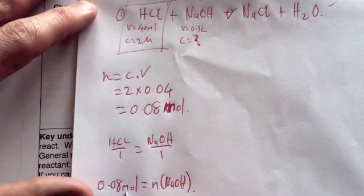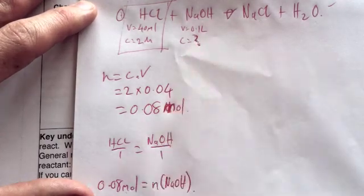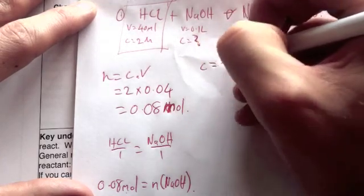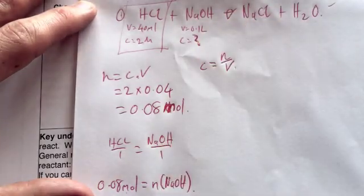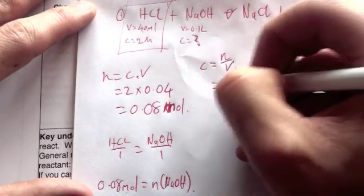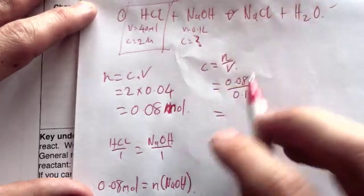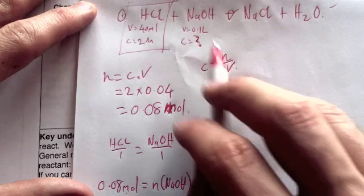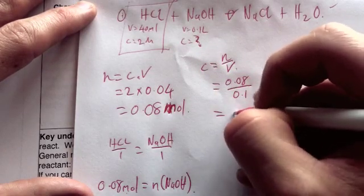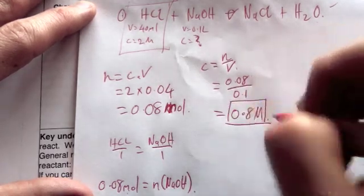We then put that into a new equation to work out the concentration of sodium hydroxide. So you go C equals n over V for our concentration. And that will be 0.08 divided by 0.1. Because 0.1 is already in litres, so we didn't need to convert it at all. So that means our concentration is going to be 0.8 molar. And there's your answer.